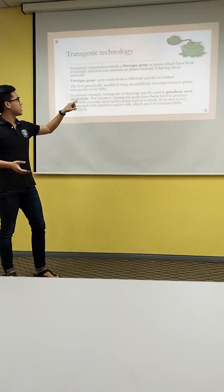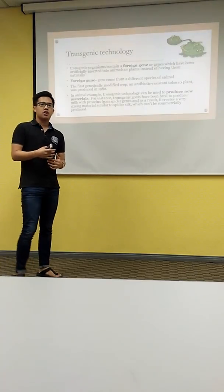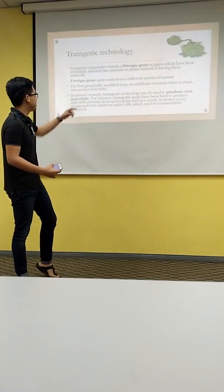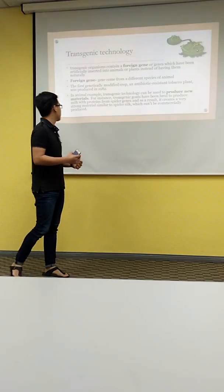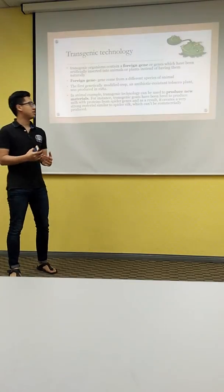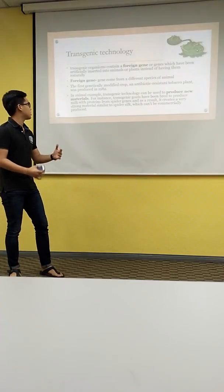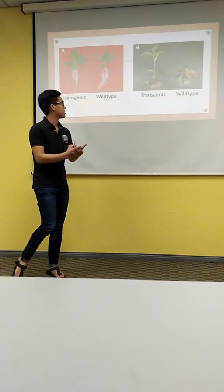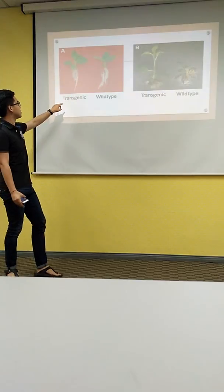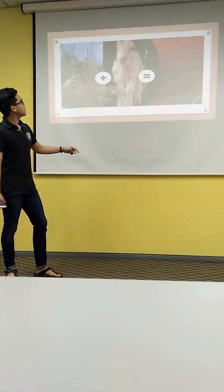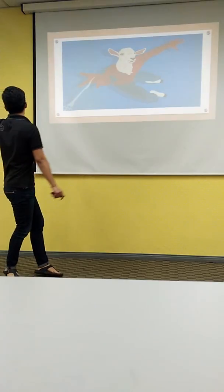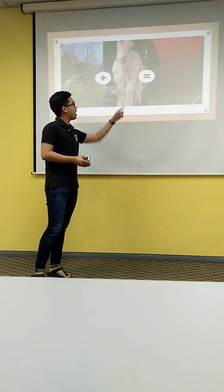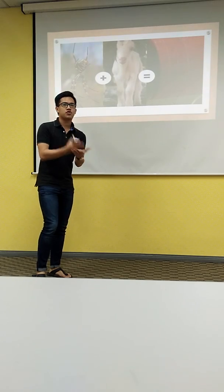In animal examples, transgenic technology can be used to produce new materials which contribute more to society. For instance, transgenic goats have been bred to produce milk with proteins from spider genes, and as a result, it creates a very strong material similar to spider silk, which can be commercially produced. This is the tobacco plant which contains the wild type. And as you can see, the spider web passed the goat, which produced commercially strong material.